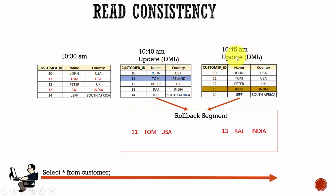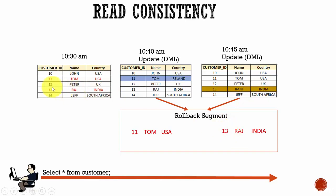Then again at 10:45 a.m. there was another update for customer ID 13, where the name was changed from Raj to Raju. Oracle database recorded that pre-modified data — which is customer ID 13, Raj, India — in the rollback segment.